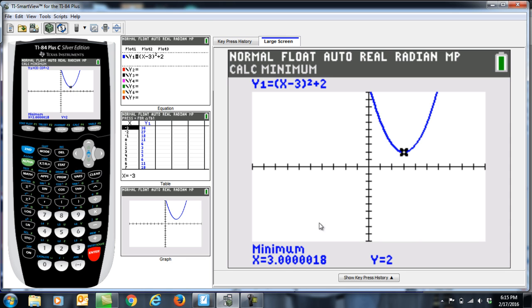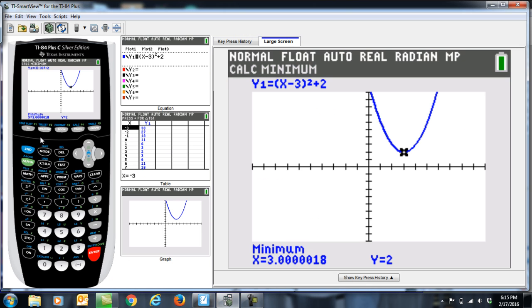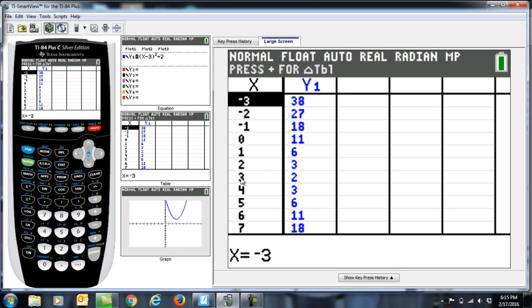It will then tell us where the minimum is. I've got all of these numbers, a big long decimal. We're going to call that 3. So our vertex is at 3, 2. If we go look at our table, second graph, and we look right here, 3, 2, there is definitely a point there.